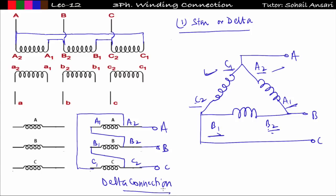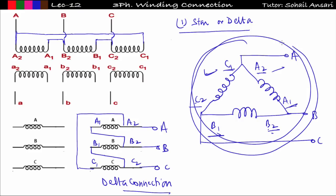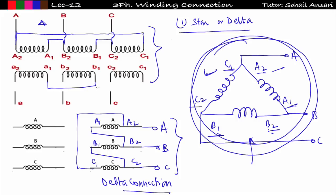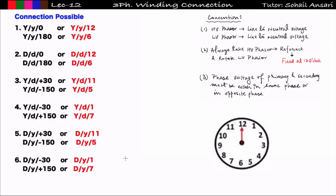These are the basics: you should know how to make a three-phase winding from three single-phase windings in both star and delta configurations. In gate exams or textbooks, diagrams will be given in Figure 1 or Figure 2 form. If A1 is connected to B2, B1 to C2, C1 to A2 — that is delta. If A1, B1, C1 are at neutral and supply is from A2, B2, C2 — that is star.